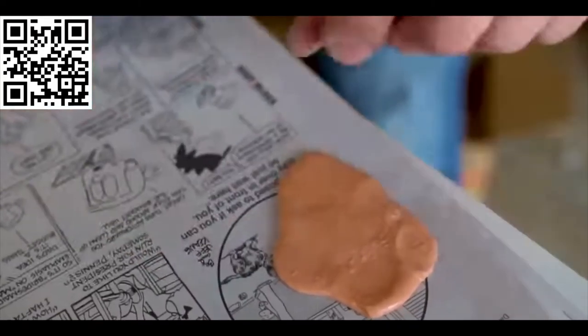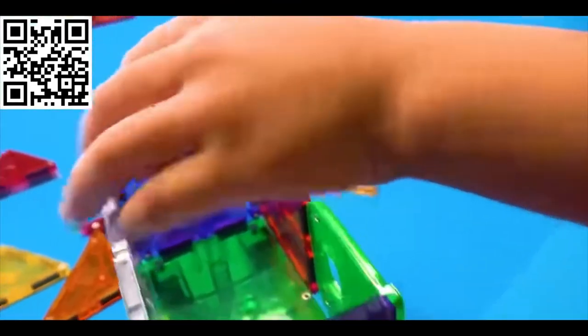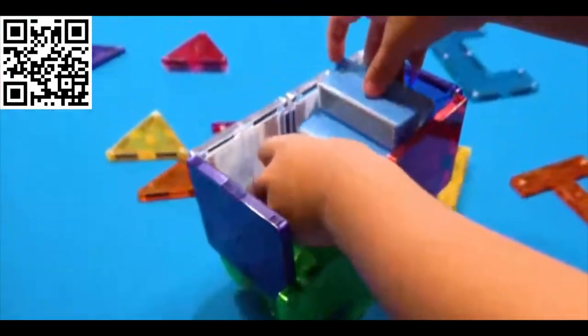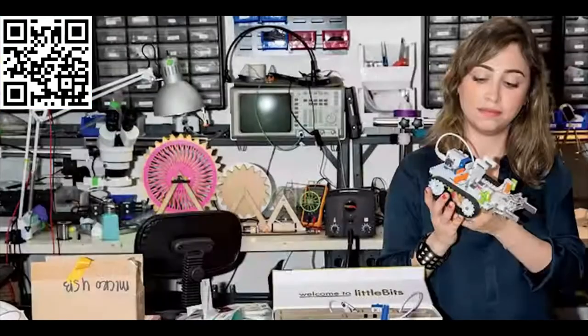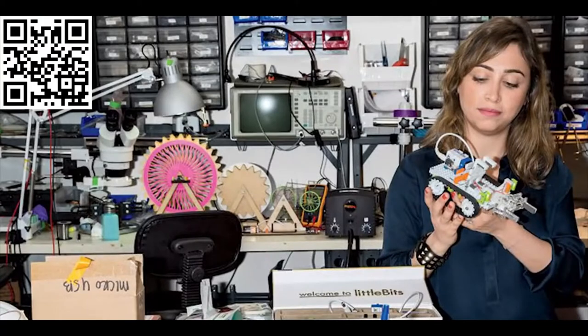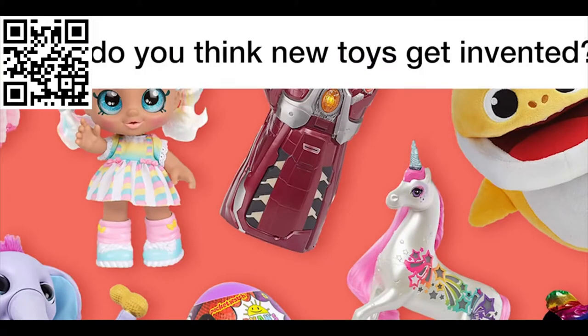Now, some of these toys are still around. You might have played with some new versions of these older toys yourself. But so many of the toys you might know and have played with are actually new kinds of toys. They didn't exist before. Someone had to invent them. How do new toys get invented in the first place? Who comes up with them? And how do they do it? What do you think? Before I say anything more, now would be a good time to pause the video and discuss.